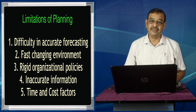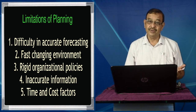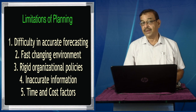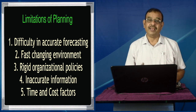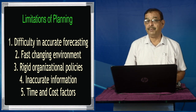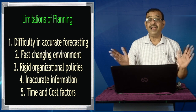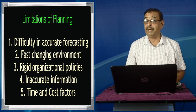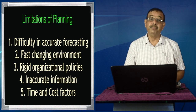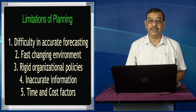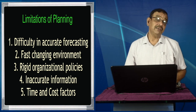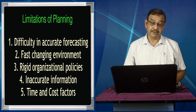Over the last two decades, because of the advent of mobile technology, the kind of changes we are all experiencing is tremendous. It is volatile. We do not know what is going to happen — uncertain. And it is highly complex and ambiguous, meaning not clear. So the environment is changing very, very fast.